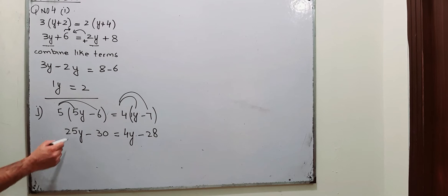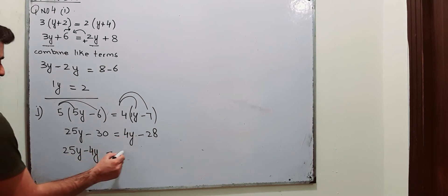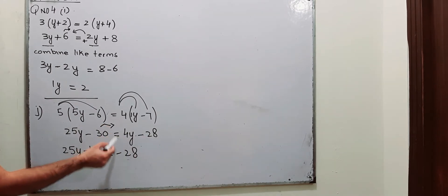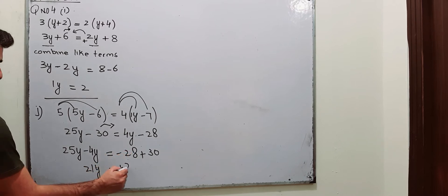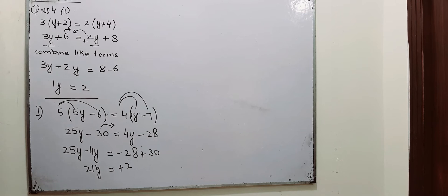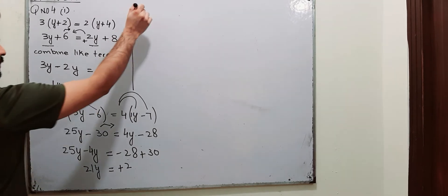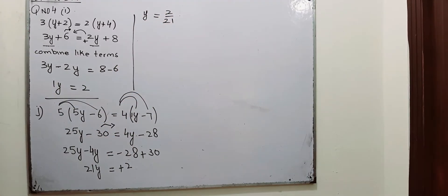Now combine the like terms — the terms involving y should be on one side. The numbers: minus 28 is already on that side. Move this minus 30 to the right side of the equation; it will become plus 30. 25y minus 4y is 21y. Minus 28 plus 30 is plus 2. Now move this 21 to the other side — it is being multiplied by y, so when moved it will divide 2. So this will be your answer for part number j.